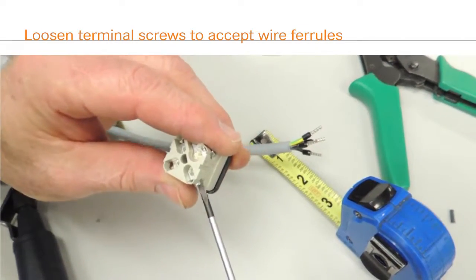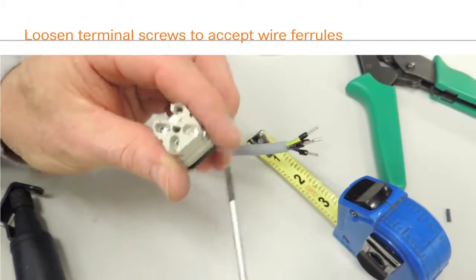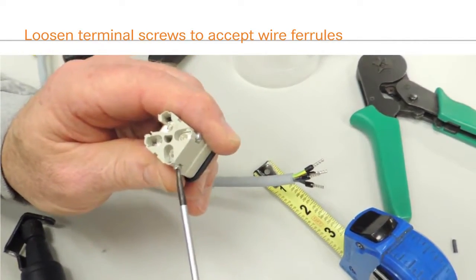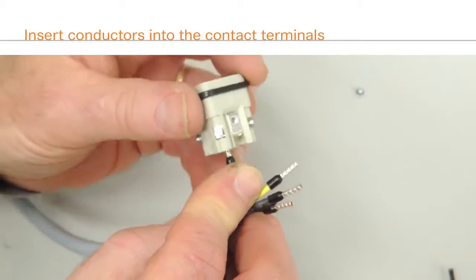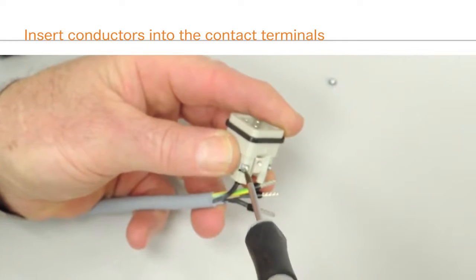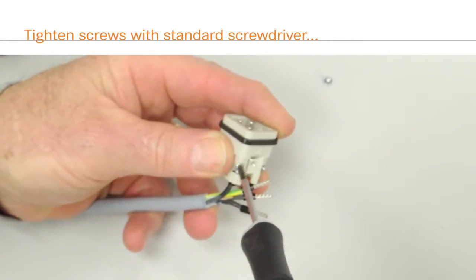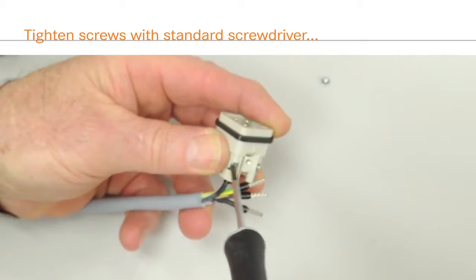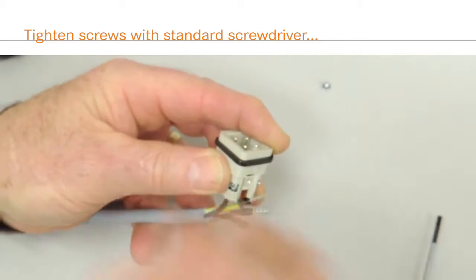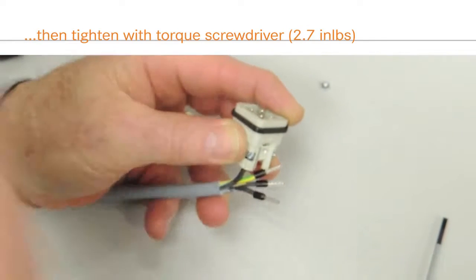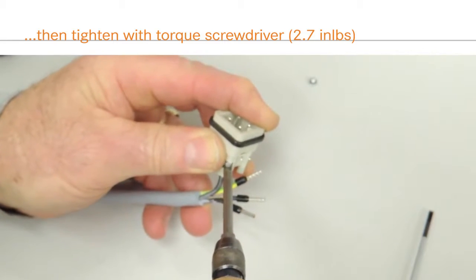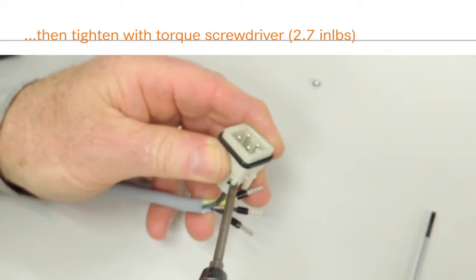Loosen the terminal screws on the insert in order to accommodate the conductor ferrules. Insert the conductors and tighten with a screwdriver. Follow this with a torque screwdriver set to 2.7 inch-pounds. Repeat for the remaining conductors.